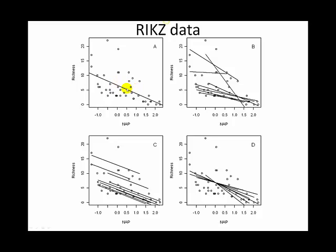We could also imagine that there are eight beaches, and each point comes from a different beach. We might ask: are all of these relationships the same on all beaches? That's the same as looking at an interaction between the category beach and the continuous predictor NAP. If we fit that model and look at the predictions, we get one line for each beach, and each of those lines has a different intercept and a different slope.